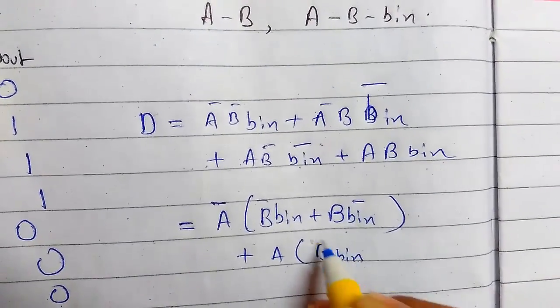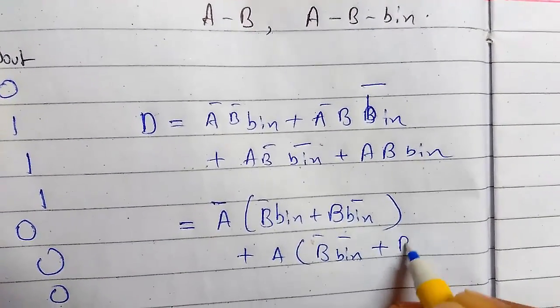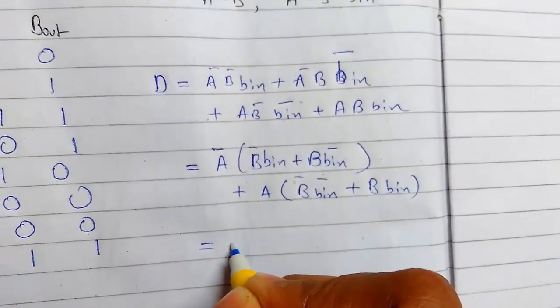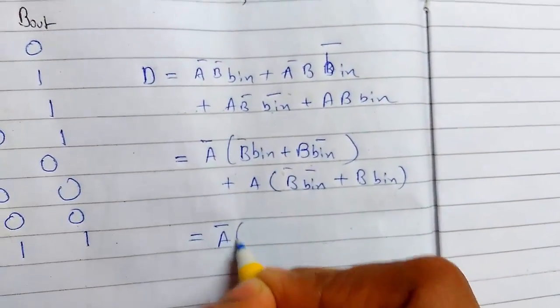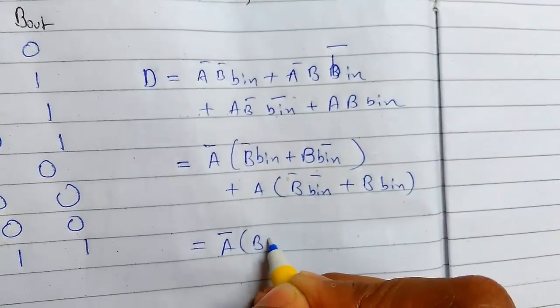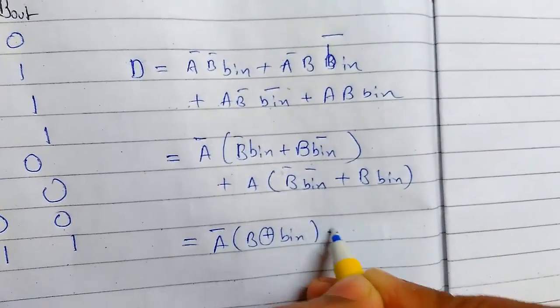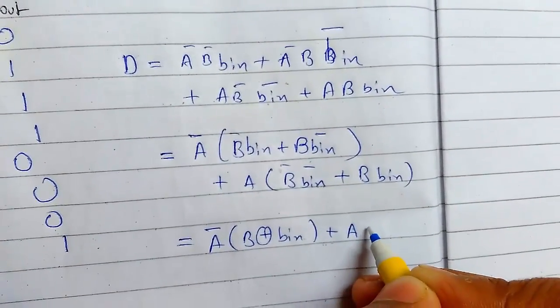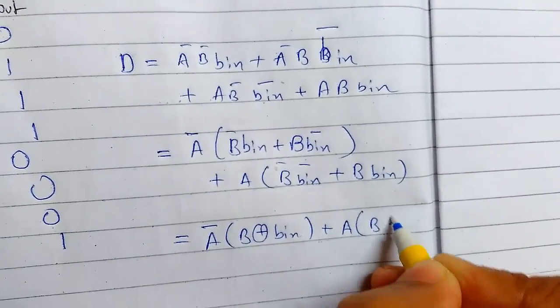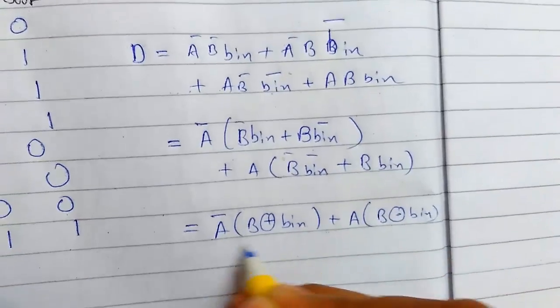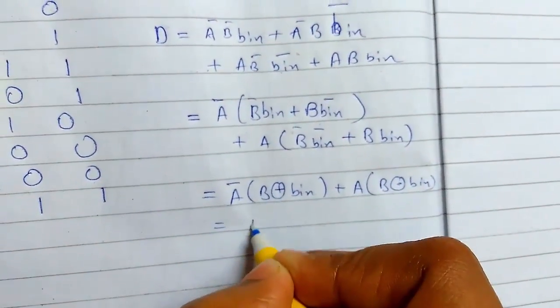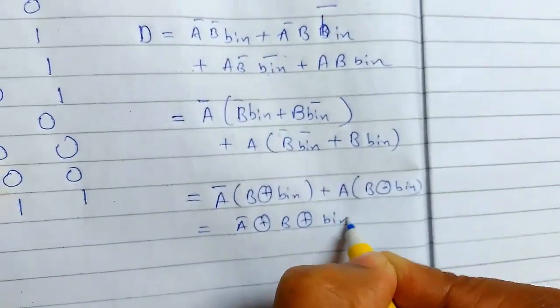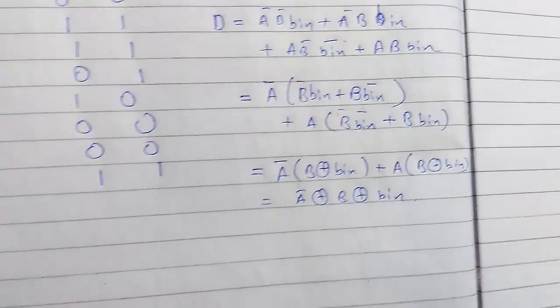This will be—I hope you are getting this. It will generate the pattern like previously. And this will be A... And we can simply write this as A XOR B XOR Bin. So this is our difference expression.